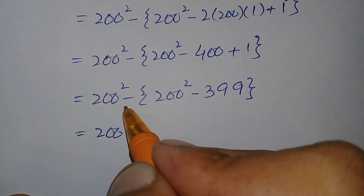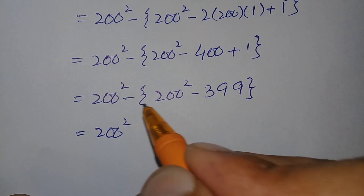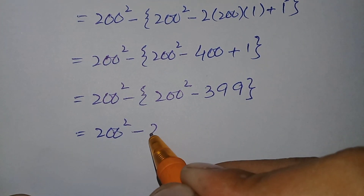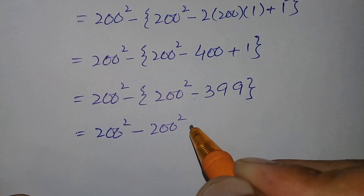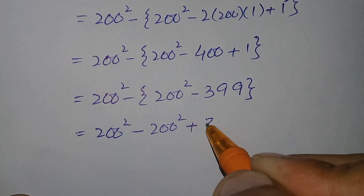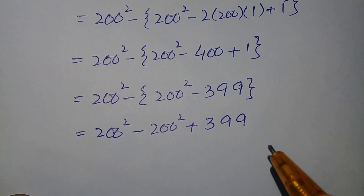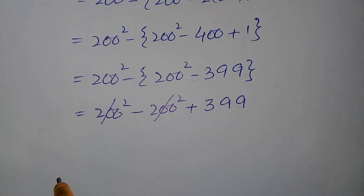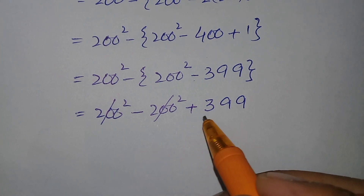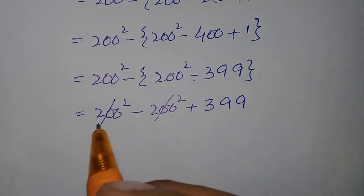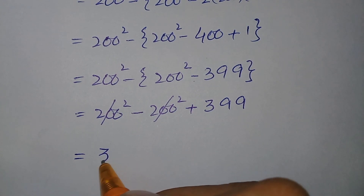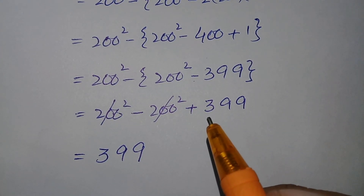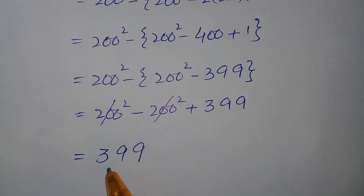We multiply the negative sign inside the braces, so it becomes minus 200 square, and minus times minus is positive 399. The 200 square terms cancel each other, leaving only positive 399. So the answer is 399. Using the first method, we got the answer 399 for this viral math problem.